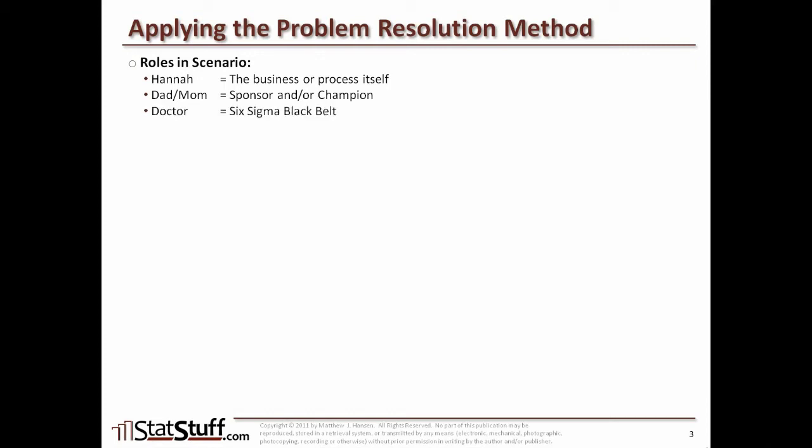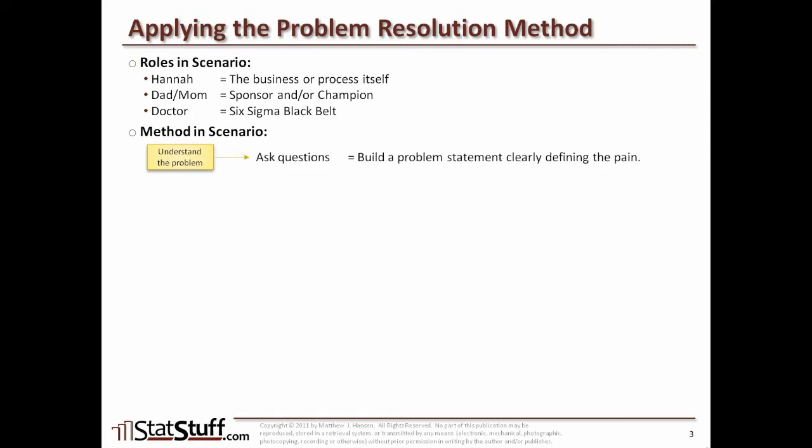The doctor represents a Six Sigma Black Belt — an expert in applying Lean and Six Sigma tools and concepts. They follow the methodology with expertise to find the root cause and lead the team to an improvement that fixes and sustains it. The first step — understanding the problem — is like the doctor asking questions about Hannah's medical history and what led to her pain. In Six Sigma, this means building a clear problem statement, defining and measuring the symptoms to understand severity.